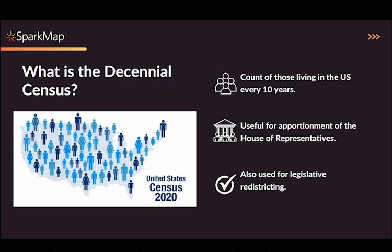According to the U.S. Census Bureau, apportionment is the process of dividing the 435 seats in the House of Representatives among the 50 states based on the population figures collected during the Decennial Census. The information collected in the Decennial Census also contributes to Congressional and state legislative redistricting.